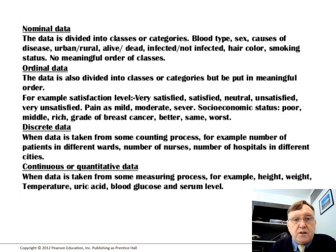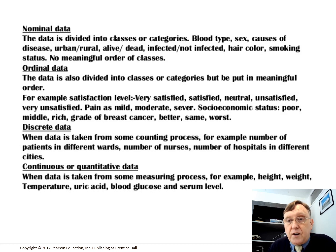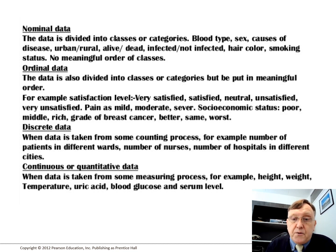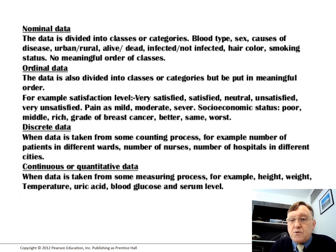Looking at each one: nominal data is divided into classes or categories — it could be blood type, sex, causes of disease, rural/urban, whether they're dead or alive, hair colour, or any other either/or option. Ordinal data is divided into classes but can be put in meaningful order — for example, very satisfied, neutral, unsatisfied, etc. Discrete data is when data is taken from some counting process, for example the number of patients or nurses. And continuous or quantitative data is when taken from some measuring process. A lot of this is directed towards medical-style examples, but whatever you're researching, it's effectively at a scientific level, even if business-orientated — the methodology is the same.